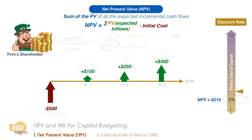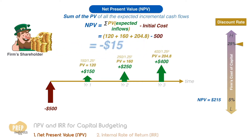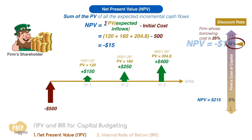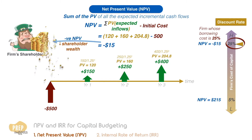Now, let's change this required rate of return to 25%. Using this discount rate, we find that the NPV drops to minus $15. So for a firm whose borrowing cost is 25%, the NPV for the same project is minus $15. It should not invest in this project as the effect on shareholder wealth is negative.